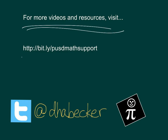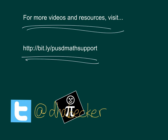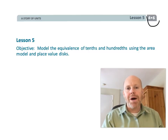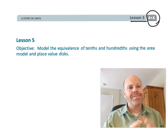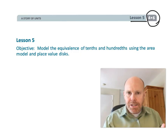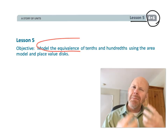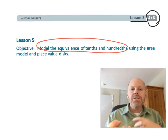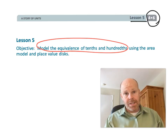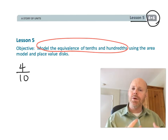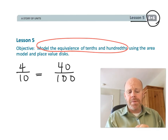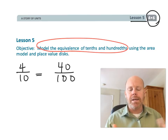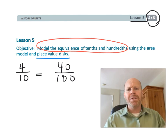This is fourth grade module six lesson five. In this lesson we're going to continue modeling tenths and hundredths, but this time we're going to model it with the idea of helping students understand the equivalence that four tenths is equal to forty hundredths. We're going to do it mathematically using the equivalence of fractions idea, and we're going to be using place value disks as well.